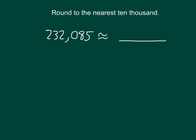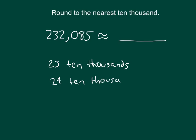Here we're asked to round to the nearest 10,000. The 10,000s place has the digit 3 right there. How many 10,000s are in this number? There are 23 ten-thousands in this number. So we're rounding either to 23 ten-thousands or to 24 ten-thousands — those are our lower and upper endpoints. Our midway point would be in between 230,000 and 250,000, which is 235,000.